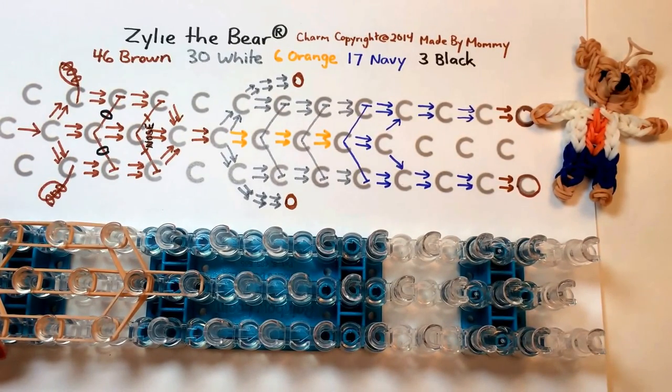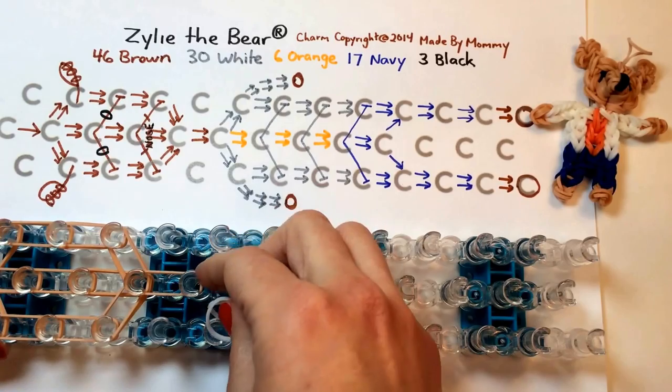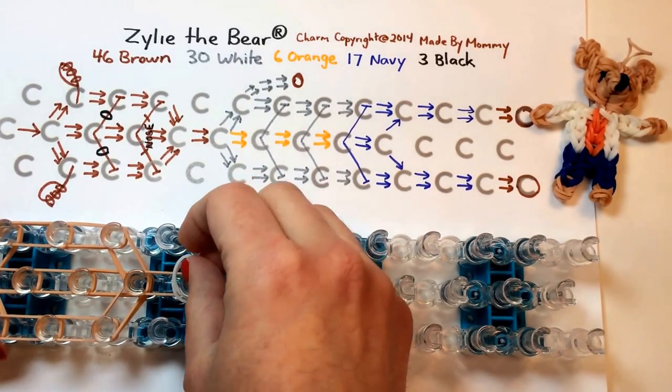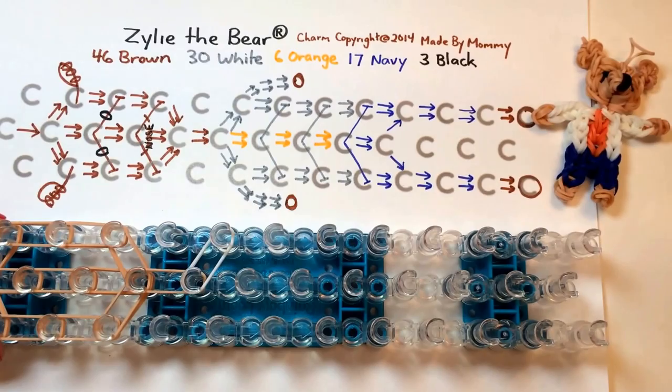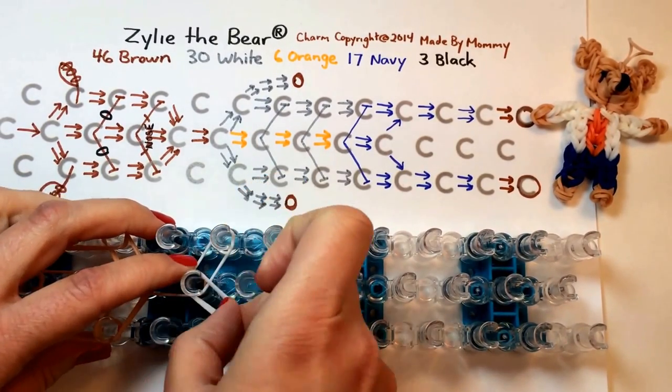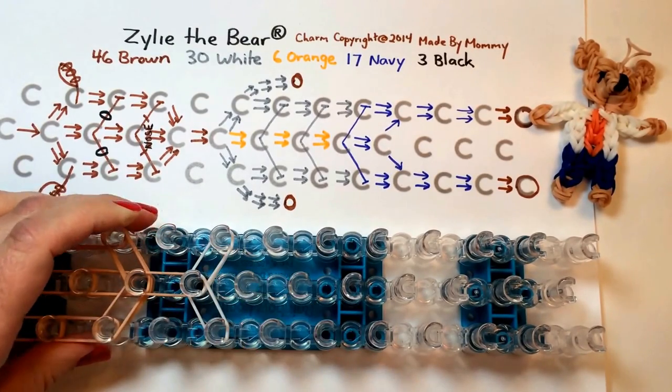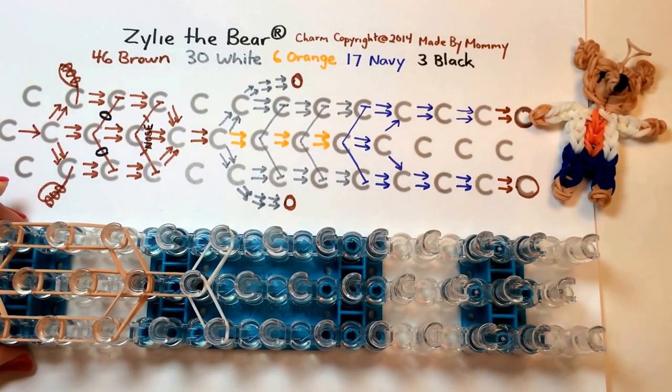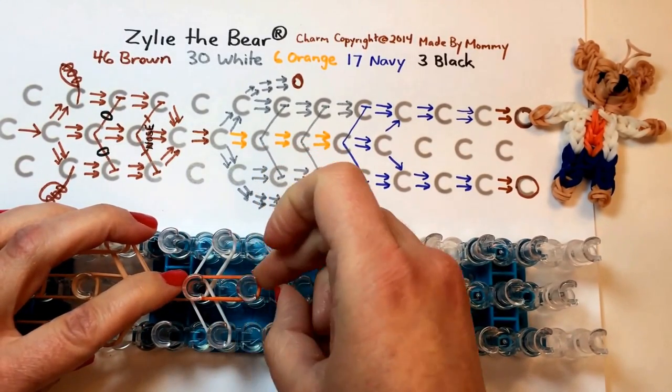And then we need two more for the neck before we switch colors for Xylee's outfit. So moving along now, we take the white for the jacket on the angle and the white for the jacket the opposite way for the other shoulder. And then orange, two at a time, down the middle to represent Xylee's shirt.